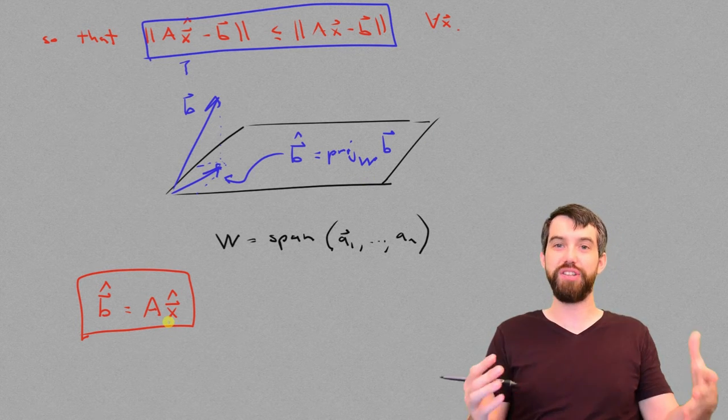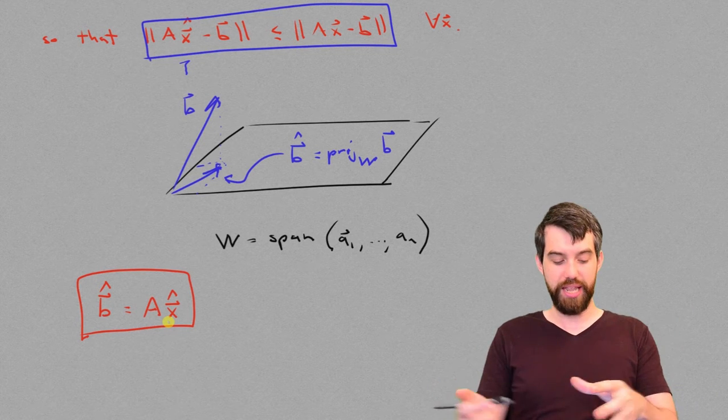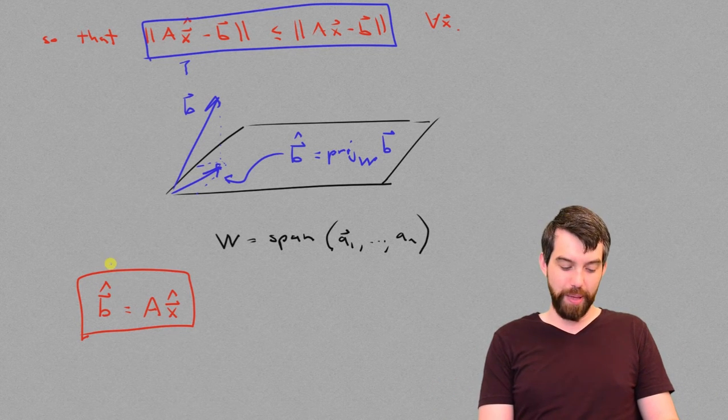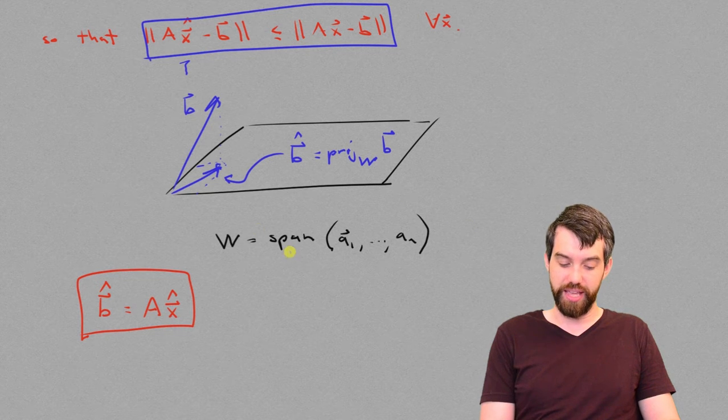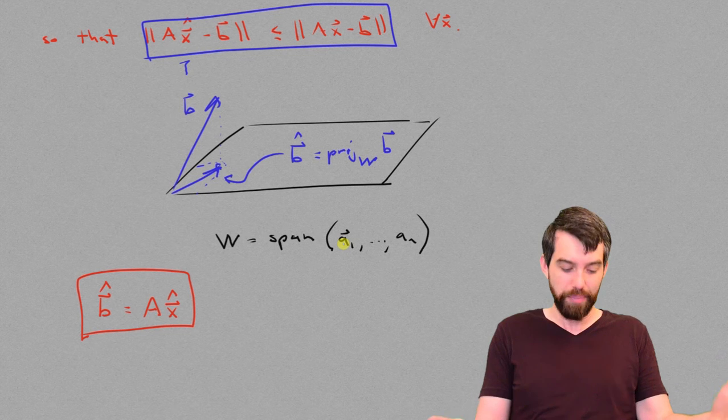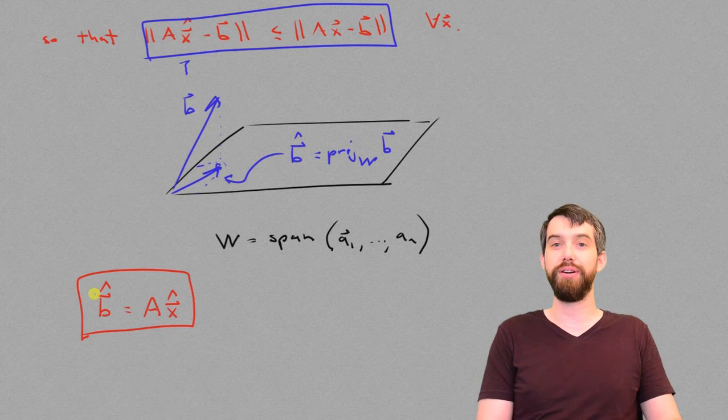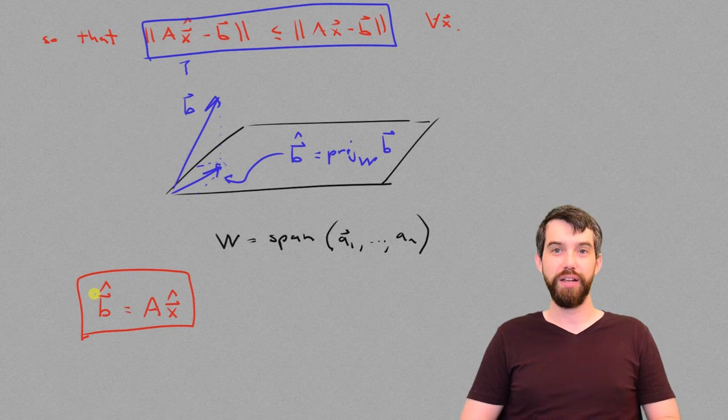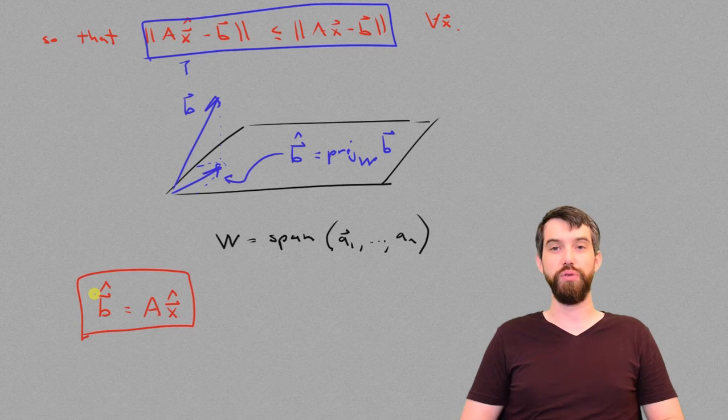and x hat is a vector such that a times it is equal to b hat. And because b hat lives in the span of the columns of a, it's for sure the case that there is some combination that's equal to it. In other words, there is some x hat that ax hat is equal to b hat.